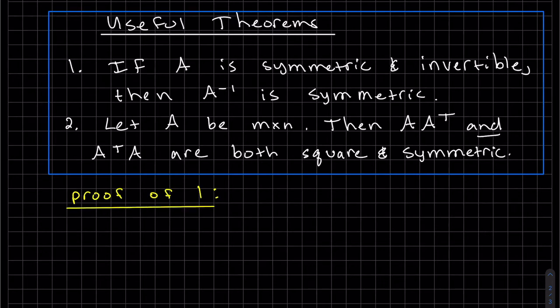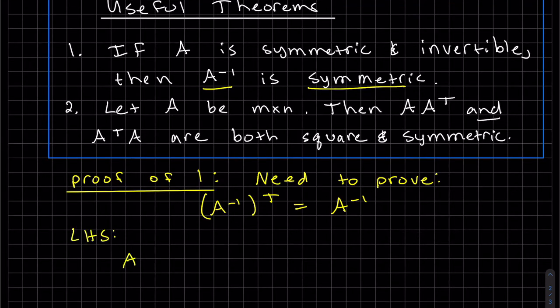So our first one, if A is symmetric and invertible, then A inverse is symmetric. So we need to prove A inverse is symmetric. If it's symmetric, then the transpose is equal to the matrix. So we're going to start with the left-hand side. And if you remember, we proved last week that these can be swapped. And we do know A is symmetric. If A is symmetric, that AT turns to A, but that minus one is still there. And we don't need the parentheses there. And that is my right-hand side.